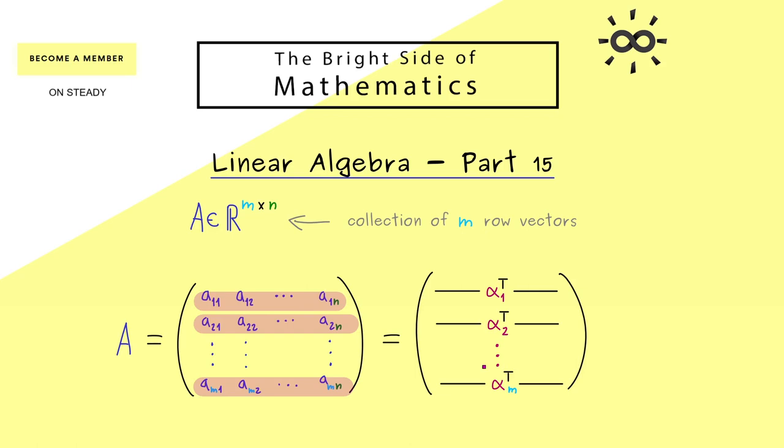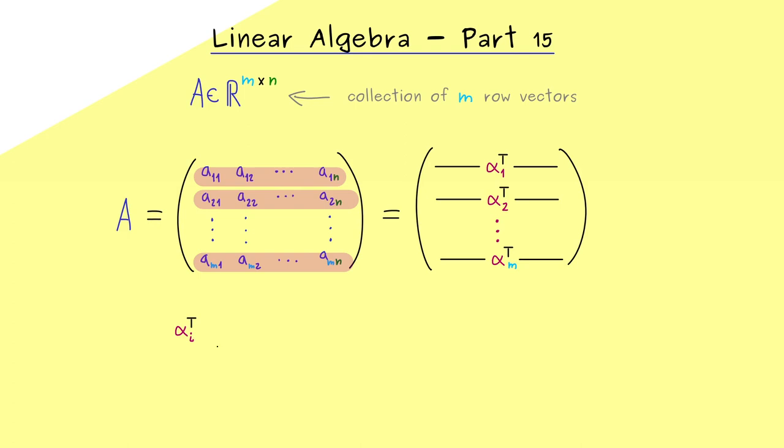You see each row vector we can simply define using the entries of the matrix A. More precisely alpha_i^T is defined by the row vector A_i1, A_i2 and so on until we have A_in. The index i stands for the ith row.